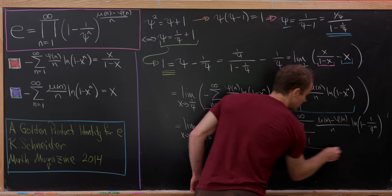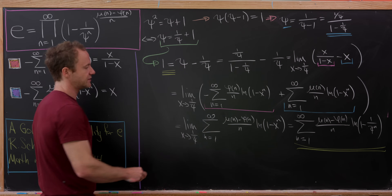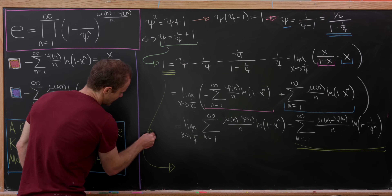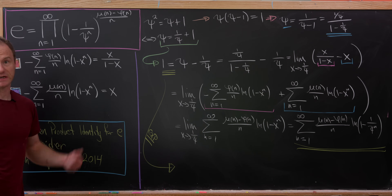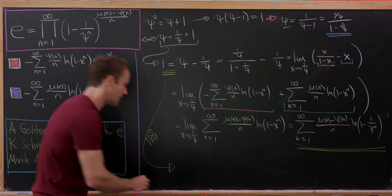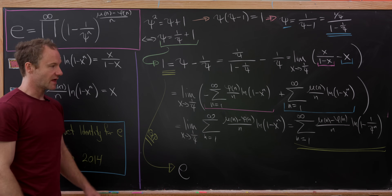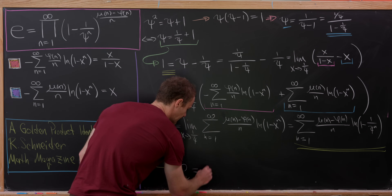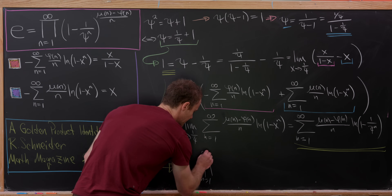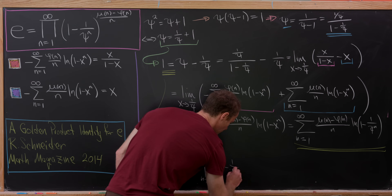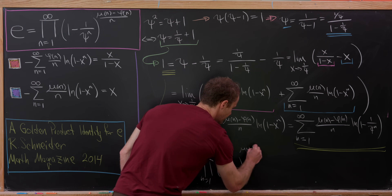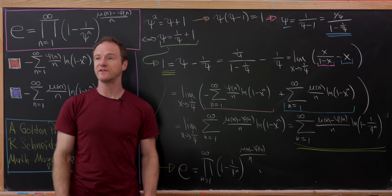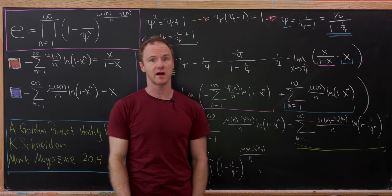So we have 1 equals this infinite sum. Exponentiating both sides: the left-hand side gives e, while the right-hand side converts the sum into a product and log rules simplify the exponents. We get the product as n goes from 1 to infinity of 1 minus 1 over psi to the n, all raised to mu of n minus phi of n over n. That's exactly the golden product identity for e — we've established it.